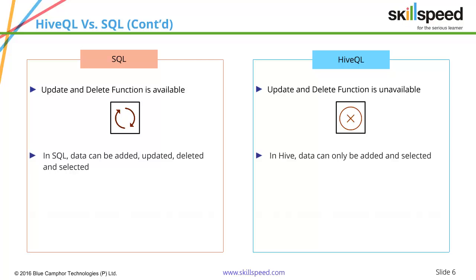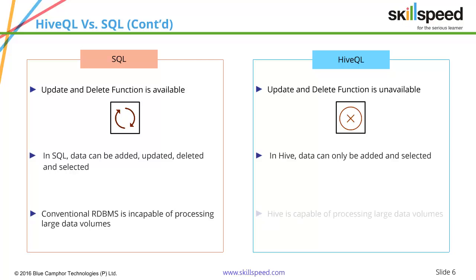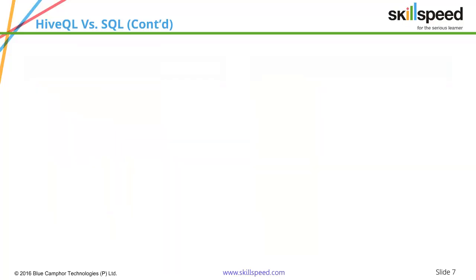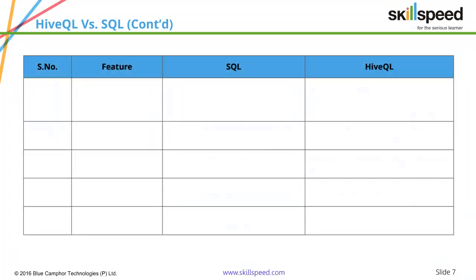The conventional RDBMS is incapable of processing large amounts of data, whereas that is when the true power of Hive comes in — it can process terabytes or even petabytes of data. Here we can see some common comparisons within SQL and Hive.